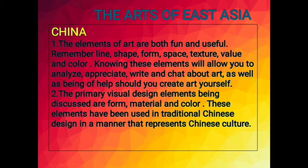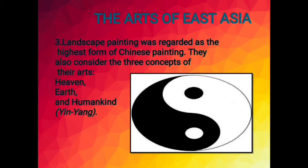The primary visual design elements being discussed are form, material, and color. These elements have been used in traditional Chinese design in a manner that represents Chinese culture. Landscape painting was regarded as the highest form of Chinese painting. They also consider the three concepts of art: heaven and earth, and humankind, known as yin and yang.